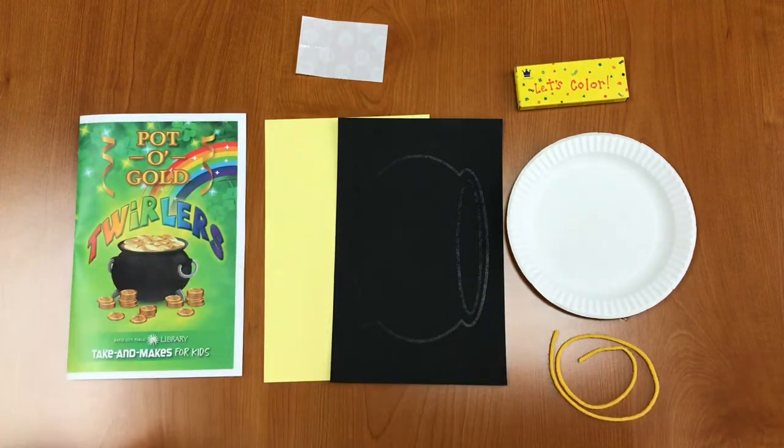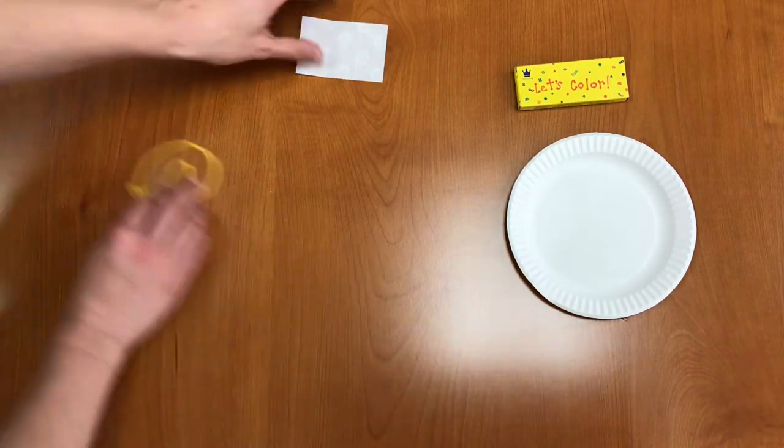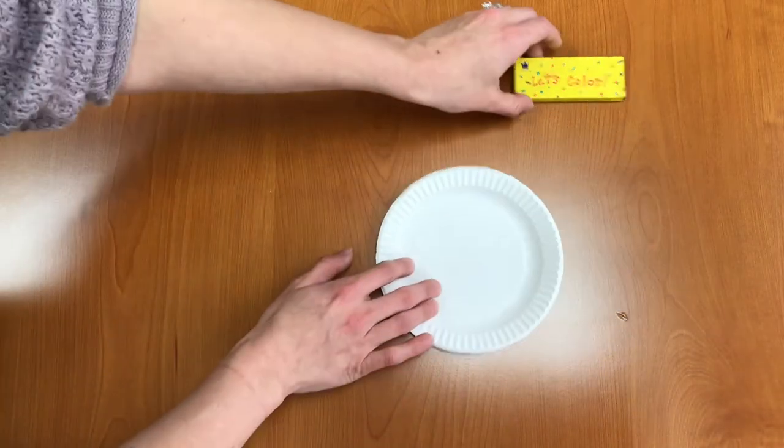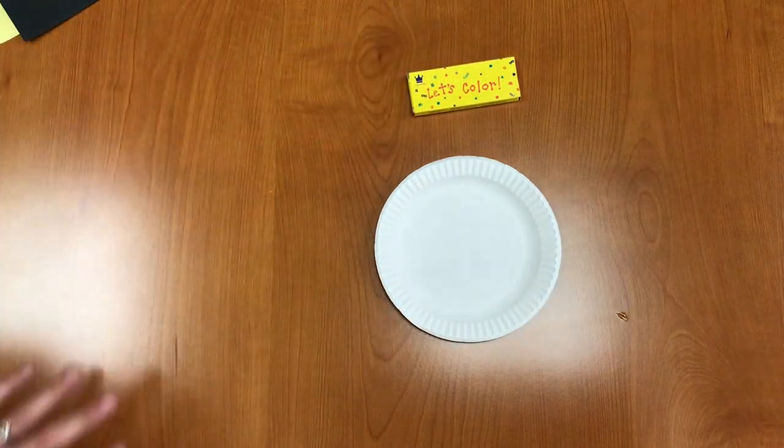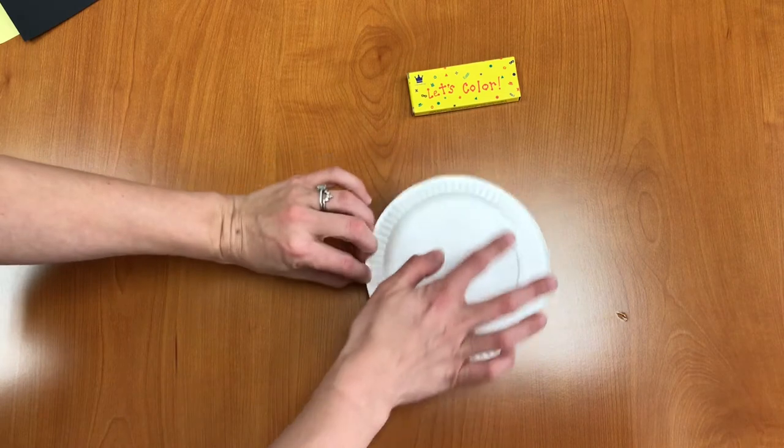Let's get started. First we're going to take everything away except for your paper plate and the crayons. And now your first step is you want to color your entire paper plate both on the front and the back.